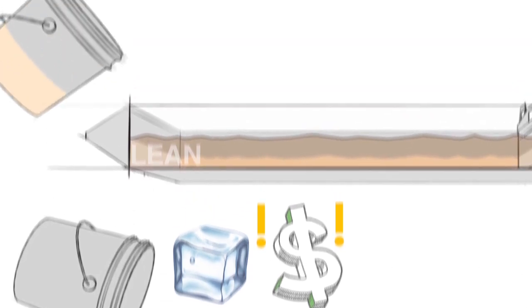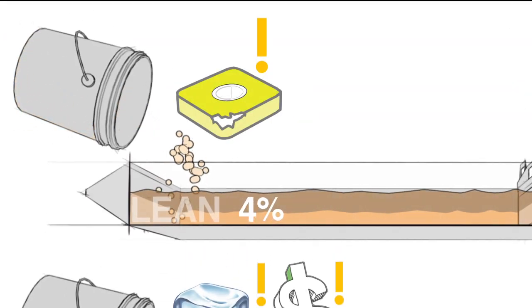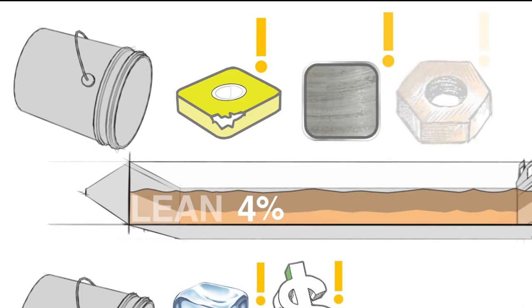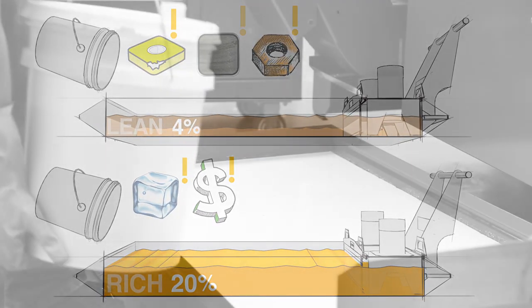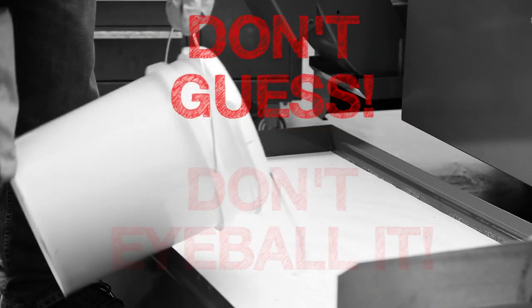If it's lean and you don't add enough concentrate, then you risk short tool life, bad surface finishes, and rusting your machine and parts. Guessing how much concentrate you should add will lead to problems. Don't eyeball it! Measuring your coolant's concentration is easy with a Refractometer.